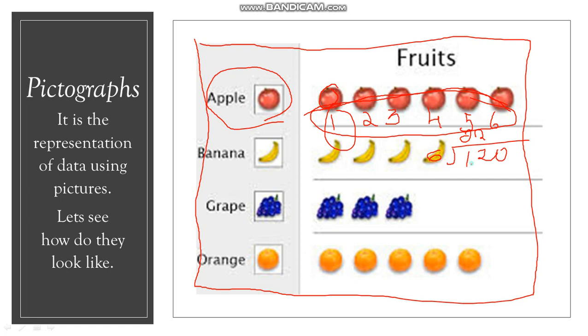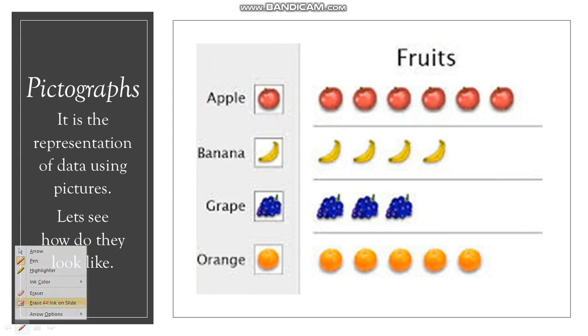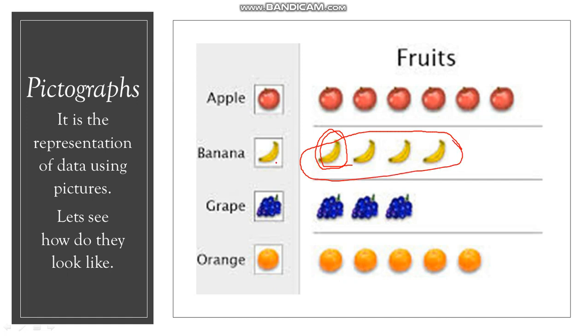0, 0, now 20. Which means the scale of this equals to 1 figure equals to 20 units. I hope this scale method is clear. So if we have 1 banana, 1 banana is 20. So 1, 2, 3, 4. We have 4 bananas. So 20 into 4, we have 80. So 80 bananas we have in all.